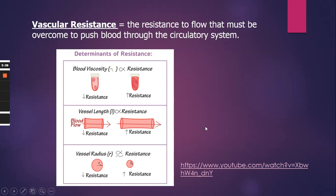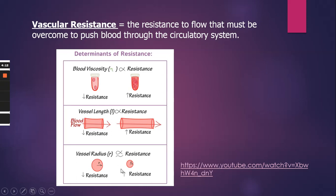A third factor is vessel radius — or you could say the diameter of the blood vessel. The radius is half the diameter. As you increase the diameter and make the inside lumen larger, that is going to decrease the resistance. Compared to a blood vessel with a smaller radius or smaller diameter, the smaller one is going to have more resistance. So as the diameter goes down, resistance increases.